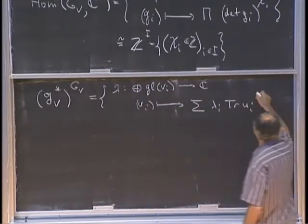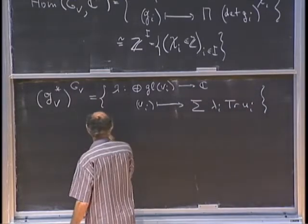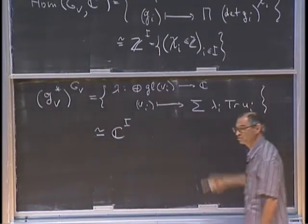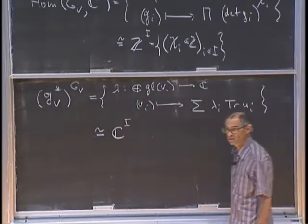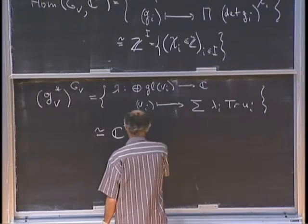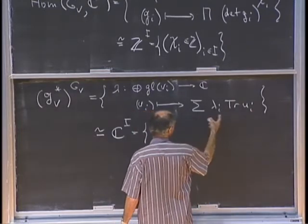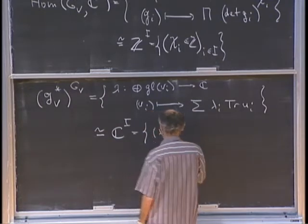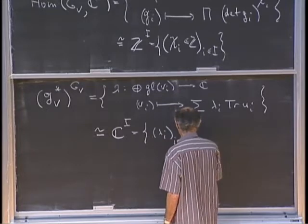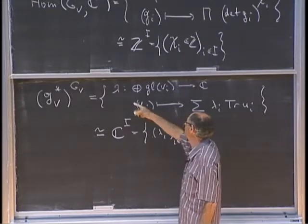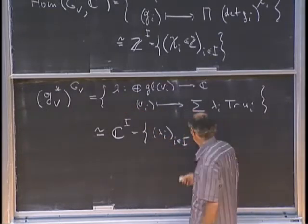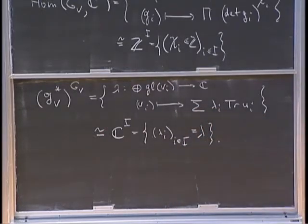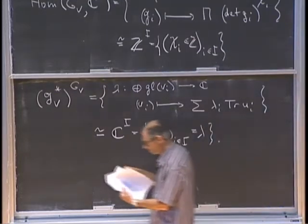Any such map takes an I-tuple of matrices and sends them to a linear combination sum of lambda_i trace(U_i). So all such maps form C to the I, with coordinates lambda_i. The character is identified with an I-tuple, and I will write lambda both for the map and for the I-tuple.